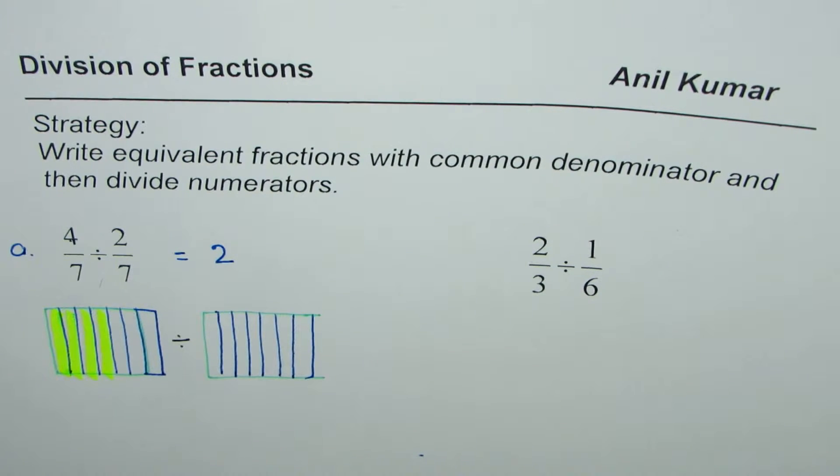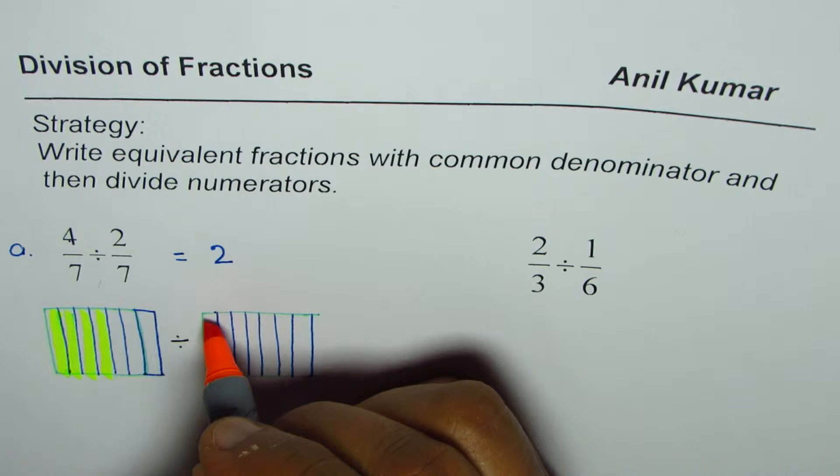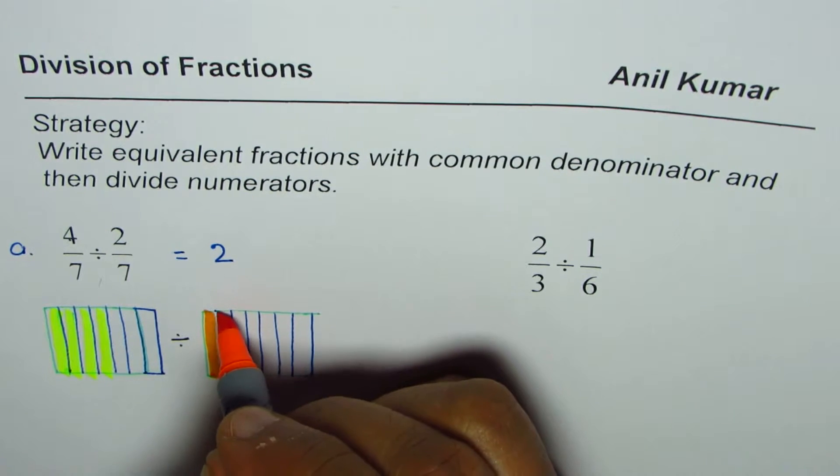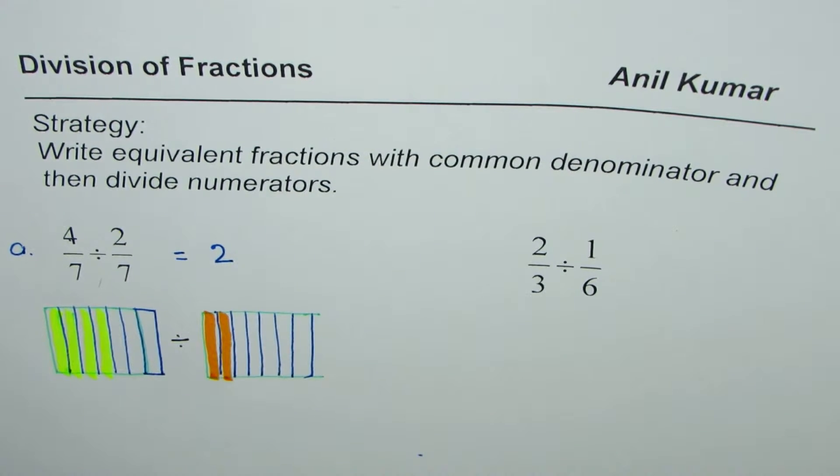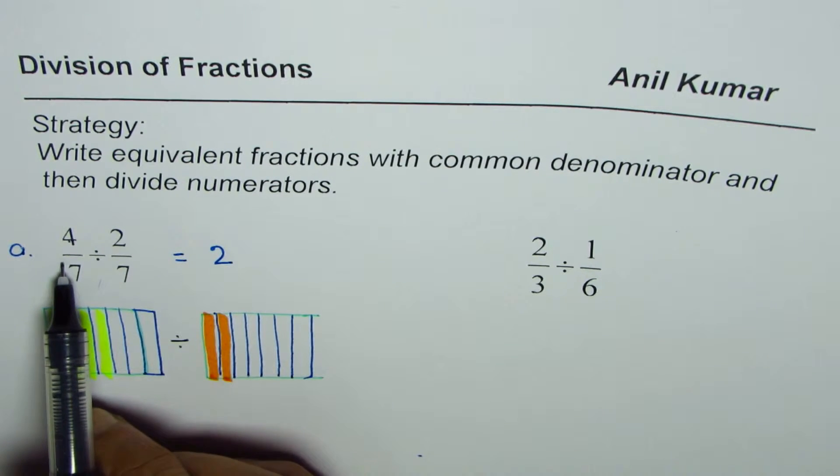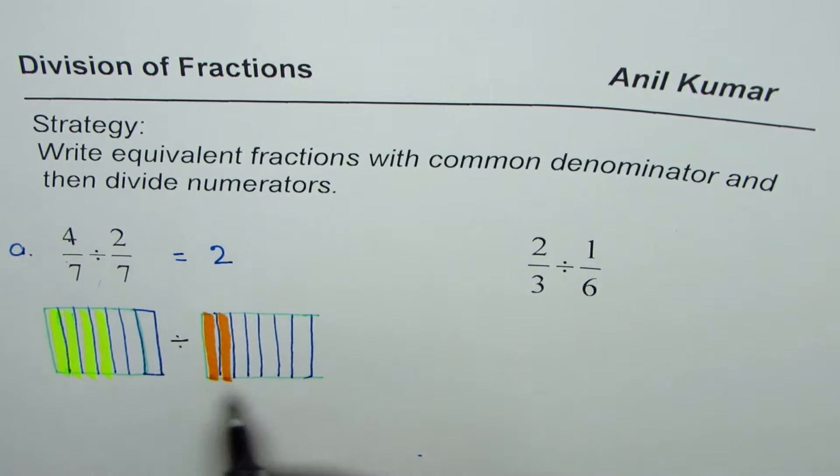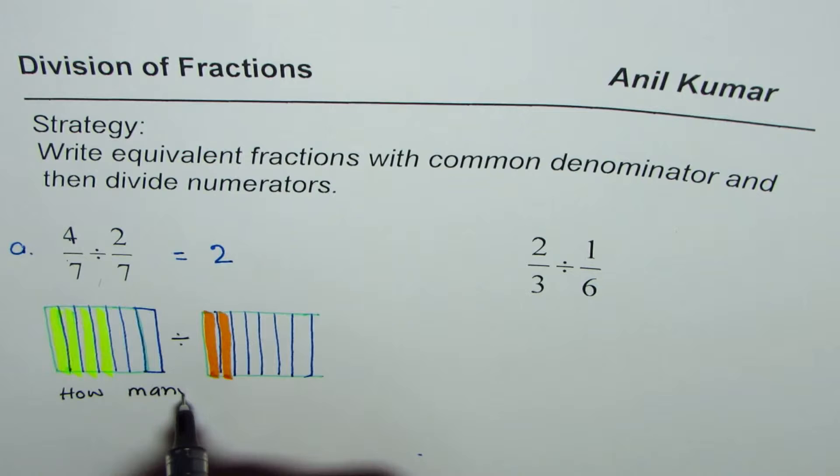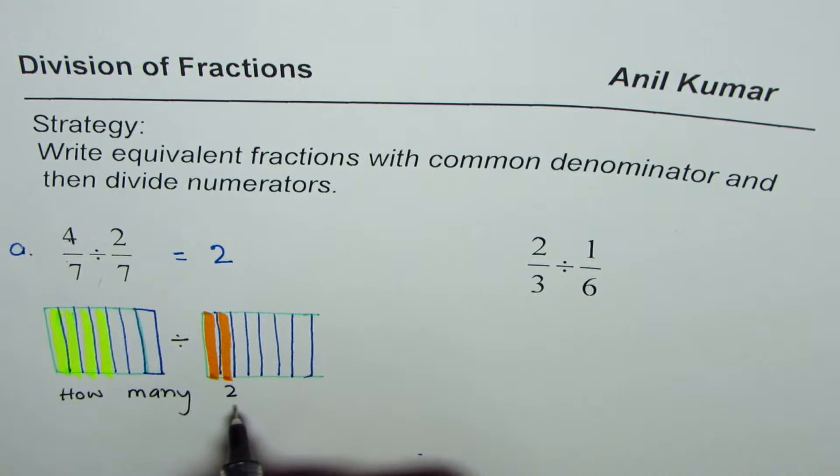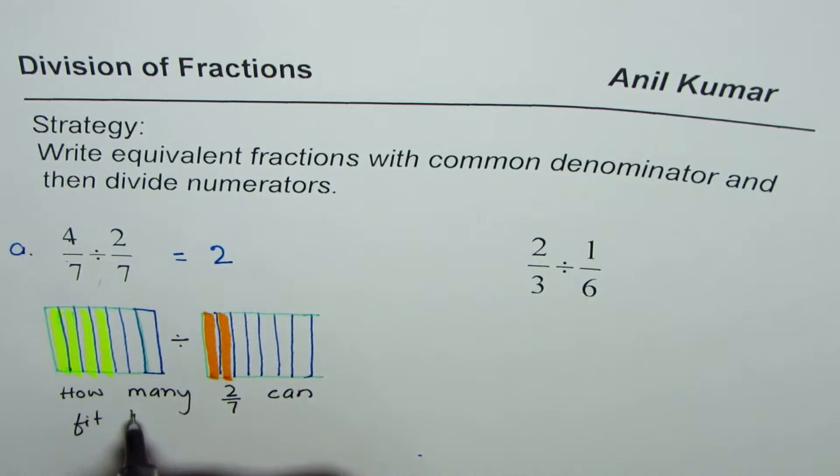Now when we say 2 out of 7, then let me shade two of them. This is kind of area model. Now whenever we are dividing a fraction by the other, we are trying to answer one question: that is how many 2 sevenths can fit into 4 sevenths.